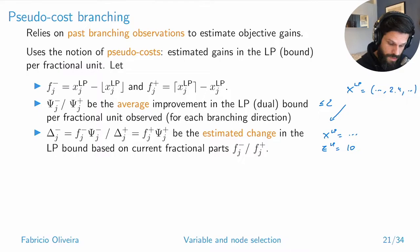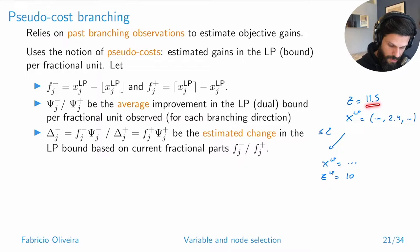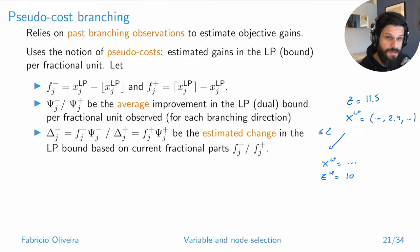Suppose after solving you got a value of 11.5. That means you observed an improvement of 1.5 for a 0.4 variation. By tracking how much your objective function decreases or increases given these fractions, you build an estimate — call it psi — giving the average estimated gain in your dual bound per unit of fractional change for that variable.